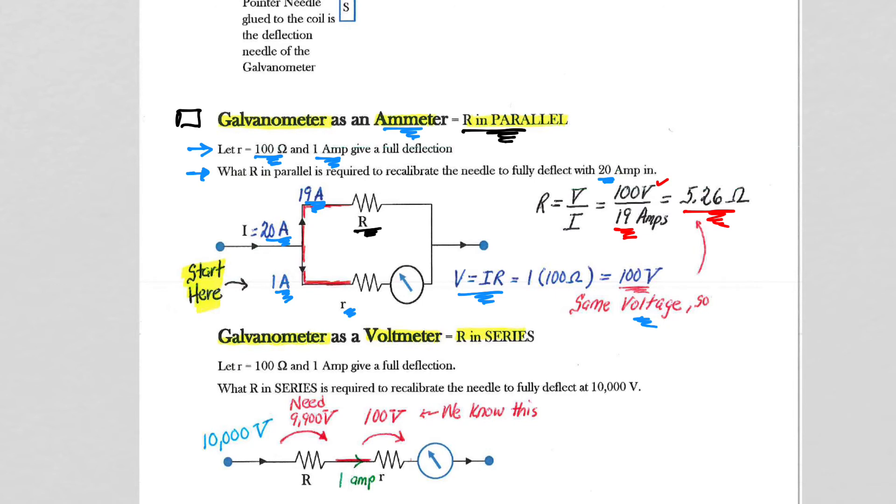The bottom line for you in terms of understanding galvanometer questions is to focus on the fact that if a galvanometer is going to operate as an ammeter, you need to calculate what resistance do you need to put in parallel with it to get it to work how you want it to work.